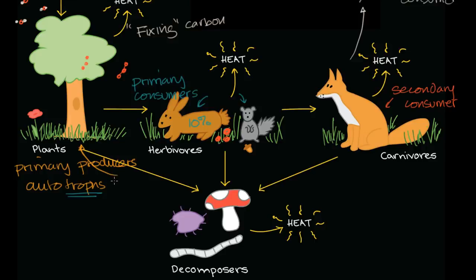This creates a really nice cycle. Energy comes in as light, gets transferred as we go through the different trophic layers, and — since it's not a completely efficient process — a lot of that energy gets released as heat as organisms live, reproduce, and move around.